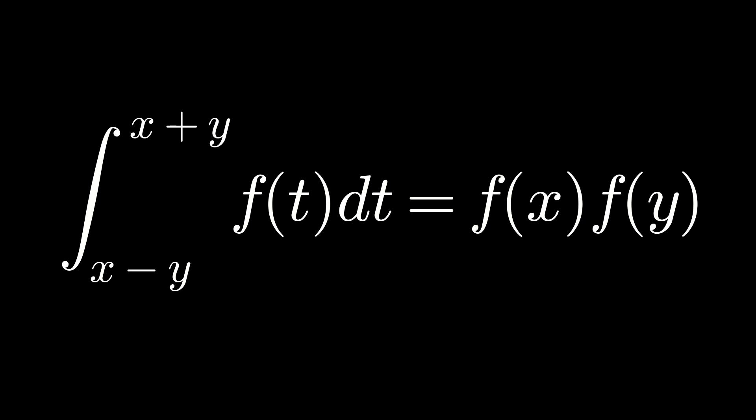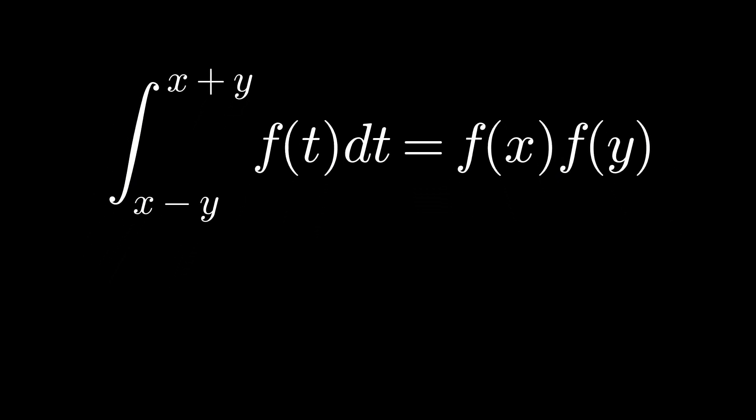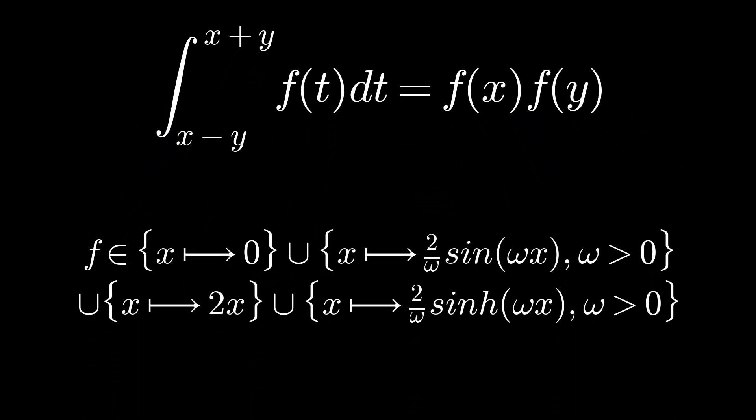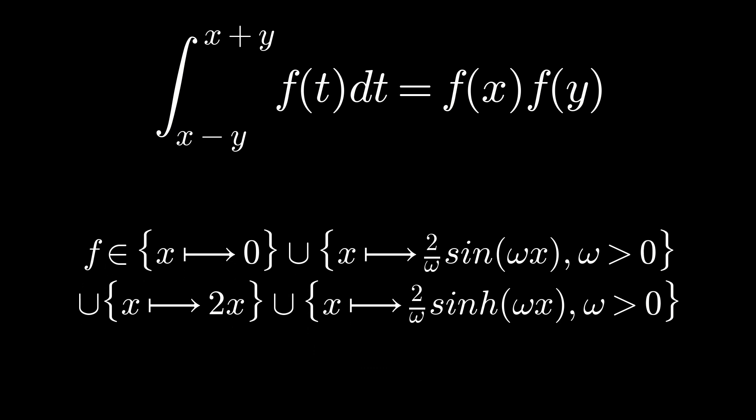As a reminder, we were able to prove that the solutions of this equation are: first, the zero function; then all the functions 2 divided by omega times sine of omega x, with omega strictly greater than zero; the linear function that maps x to 2x; and finally, all the functions 2 divided by omega times hyperbolic sine of omega x, for all omega greater than zero. We're going to plot all these different functions on a graph to see how they are related to one another.